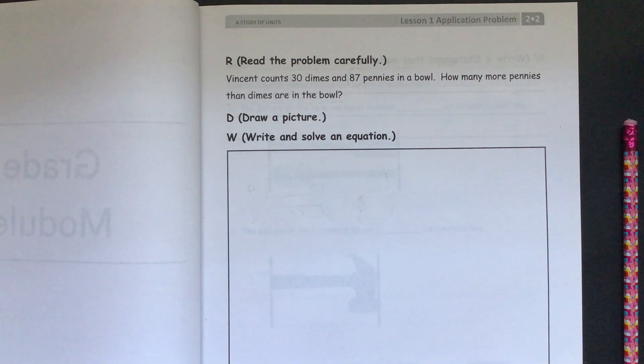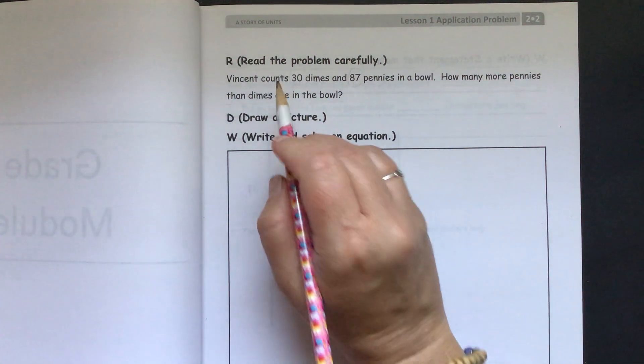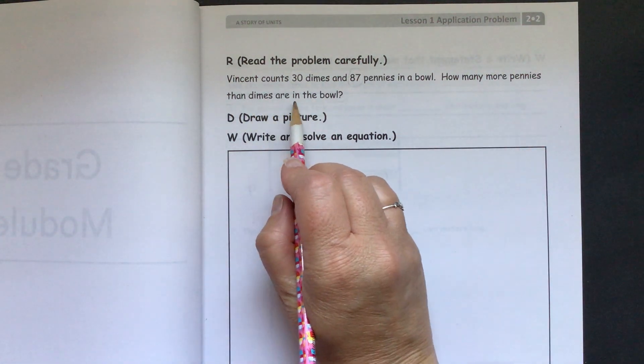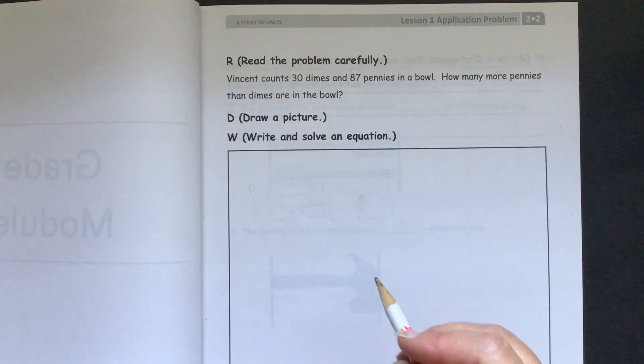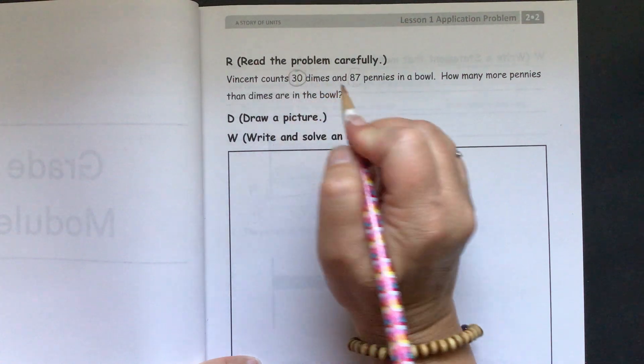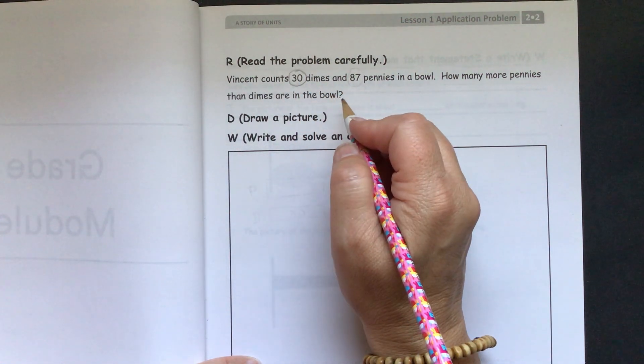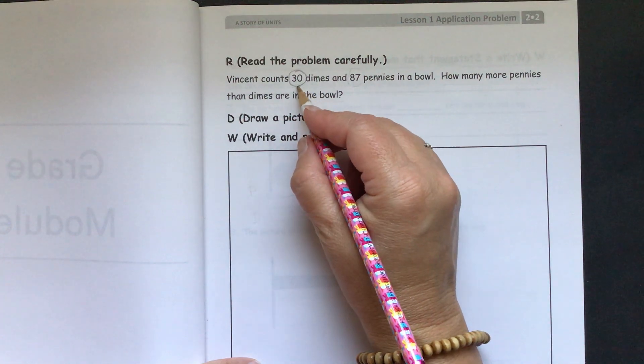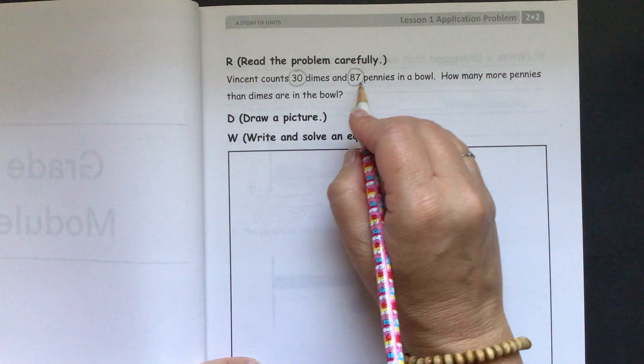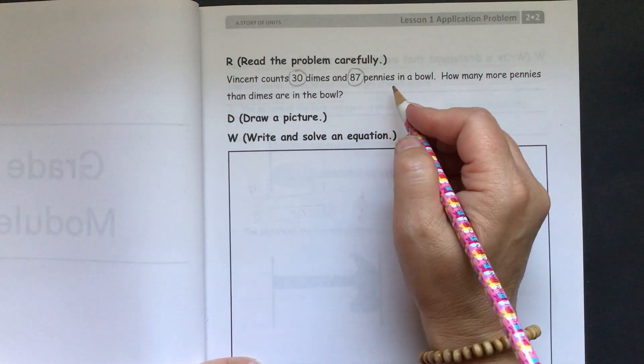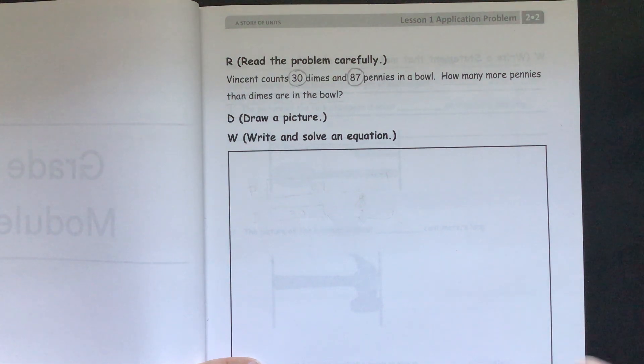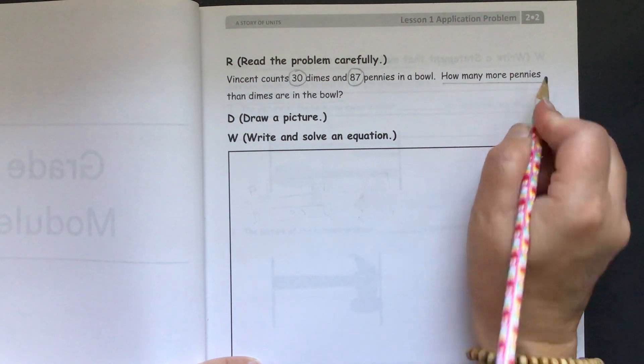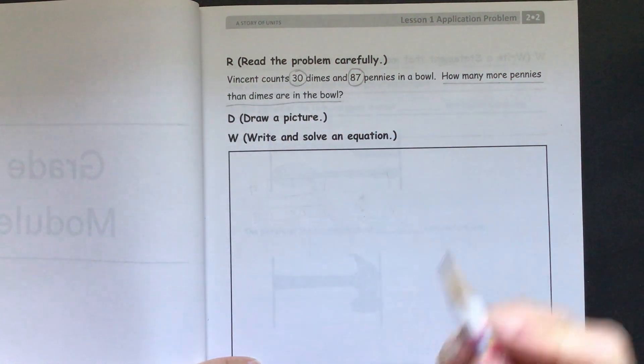So we'll start with our application problem. Vincent counts 30 dimes and 87 pennies in a bowl. How many more pennies than dimes are in the bowl? Okay, so we need to circle our key information. We have 30 and they're dimes, but we don't have to count the value of them. We're just counting them as an object, so we're just going to circle 30. And 87 pennies, same thing. We're just counting them as objects, not figuring out how much money we have like a value. So we'll just circle 87. Then we'll underline our question: How many more pennies than dimes are in the bowl?